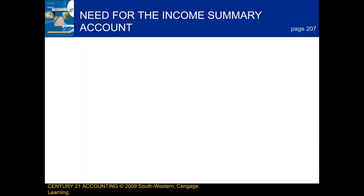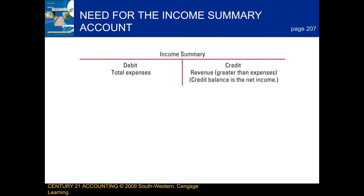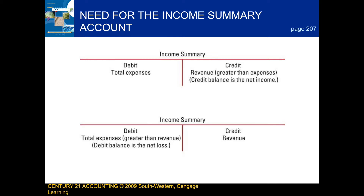Next, we're going to be talking about the need for the income summary account. As we learned in chapter 6, when revenue is greater than total expenses, we have a net income. And when total expenses are greater than revenue, we have a net loss. If we have a net income, we would debit income summary and then credit the owner's capital account. And if we had a net loss, we would debit the owner's capital account and then credit income summary.